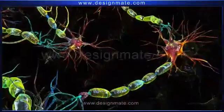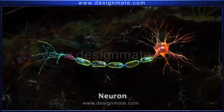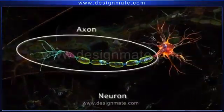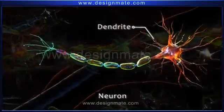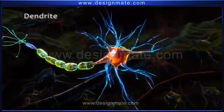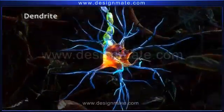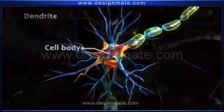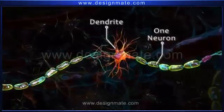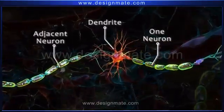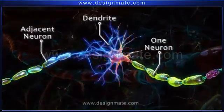Let us now study the structure of a neuron. It has three parts: an axon, a cell body, and dendrites. Dendrites are the short, branched cellular extensions of the cell body. They connect the neuron to the other surrounding neurons and receive signals in the form of impulses.